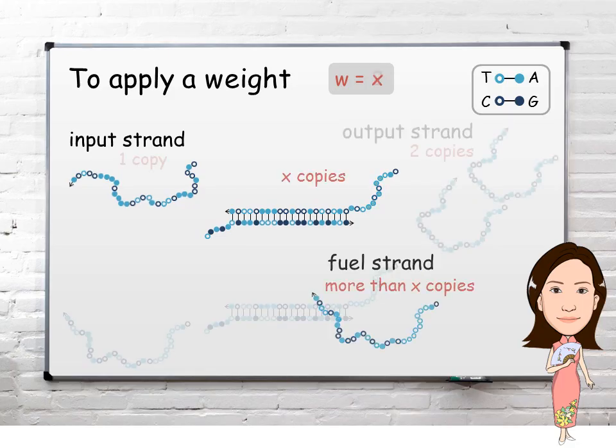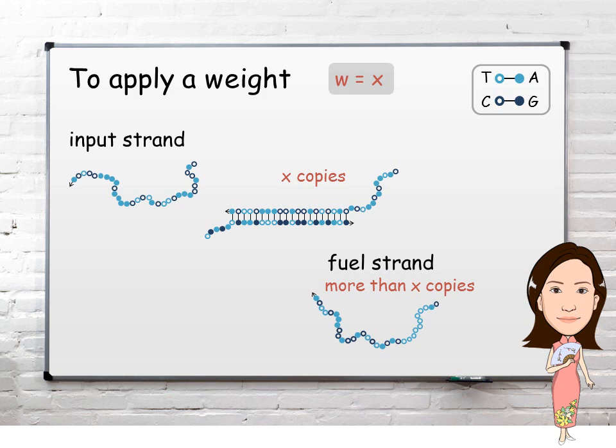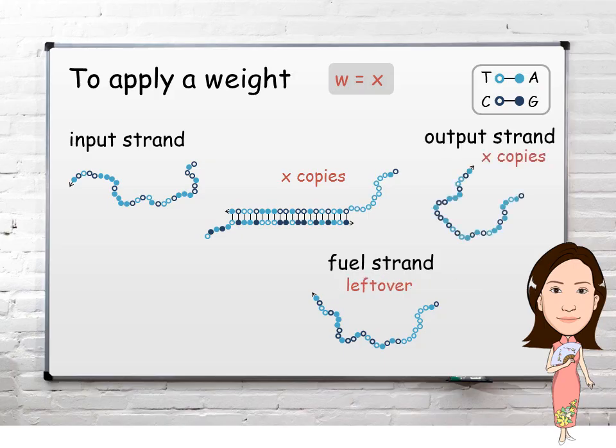Generally, to apply a weight x, one can start with x copies of the double-stranded molecule, and more than x copies of the fuel strand. As long as the input strand exists, it will produce x copies of the output strand, implementing the applied weight x.